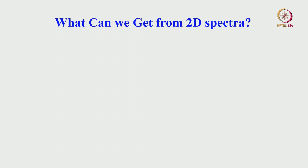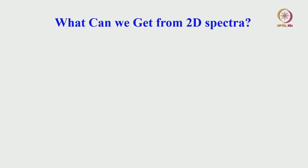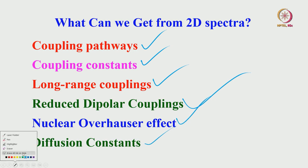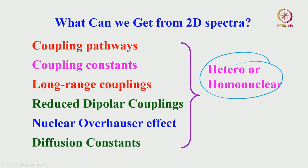Apart from simplifying the spectrum and providing better resolution for easier analysis, what else do we get from the 2D spectrum? We can get the coupling pathway — you do not get that as clearly in 1D. Of course, coupling constants we can get in both 1D and 2D, but in a better way with 2D. Long-range couplings, residual dipolar couplings, nuclear Overhauser effect, and diffusion constants — all those things we can get. Both heteronuclear and homonuclear spin system information can be obtained from the 2D spectrum.